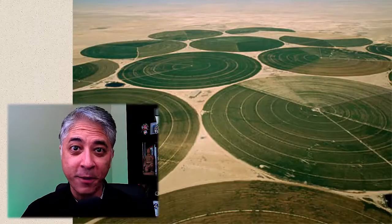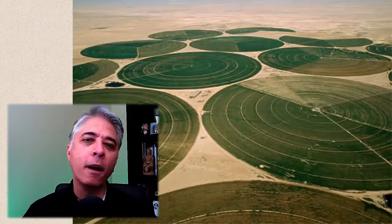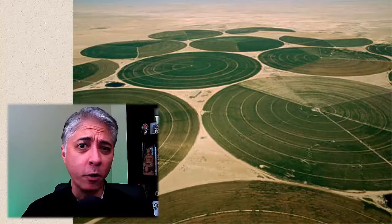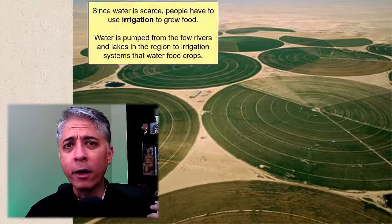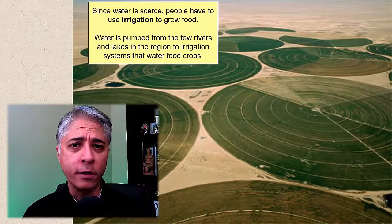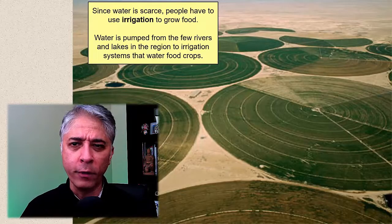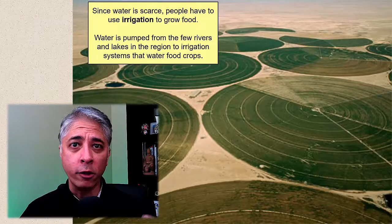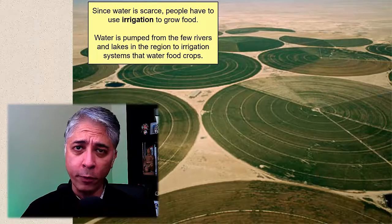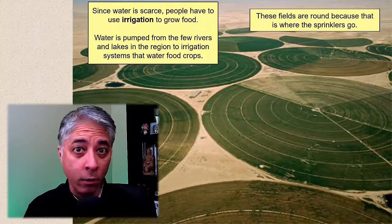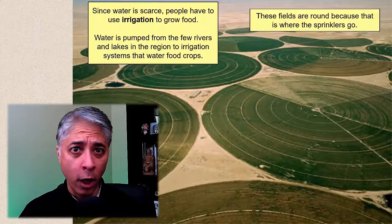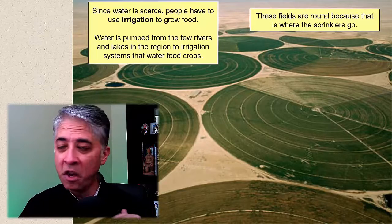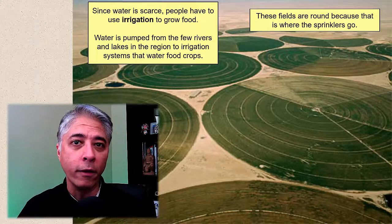I'm going to show you what a typical farm in Southwest Asia looks like. Is this what you were expecting? Probably not. You expect farm fields to be a patchwork of squares and rectangles. These farms look very different from that. When you're in a place where water is scarce, you have to use irrigation to grow your food. Water has to be pumped from freshwater sources, sometimes miles away, to irrigate your crops so that you can grow food.